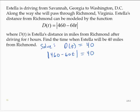Since we have the absolute value equaling a positive number, that tells us that 460 minus 60t is equal to negative 40, or 460 minus 60t is equal to positive 40.